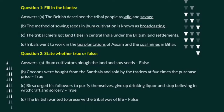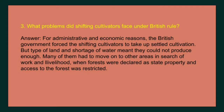Question number three: what problems did shifting cultivators face under British rule? The answer is: for administrative and economic reasons, the British government forced the shifting cultivators to take up settled cultivation. But the type of land and shortage of water meant they could not produce enough.